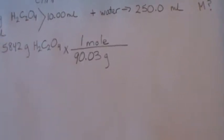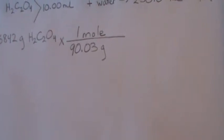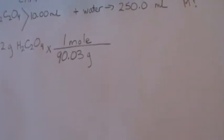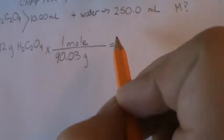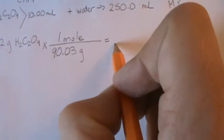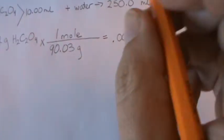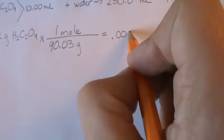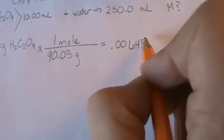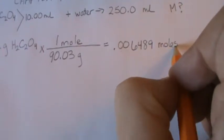So I would say 0.5842 divided by 90.03 and my answer, I can have four significant figures here. So my answer would be 0.00. Now those don't count for significant figures. Now I have four from here, 6, 4, 8, 9 moles.